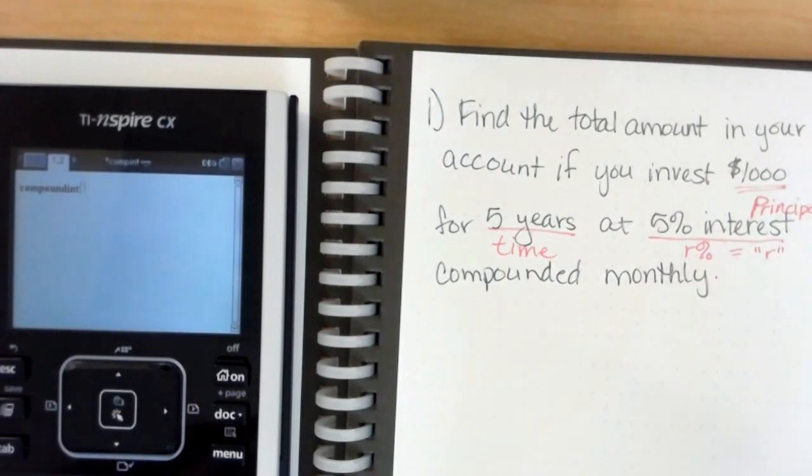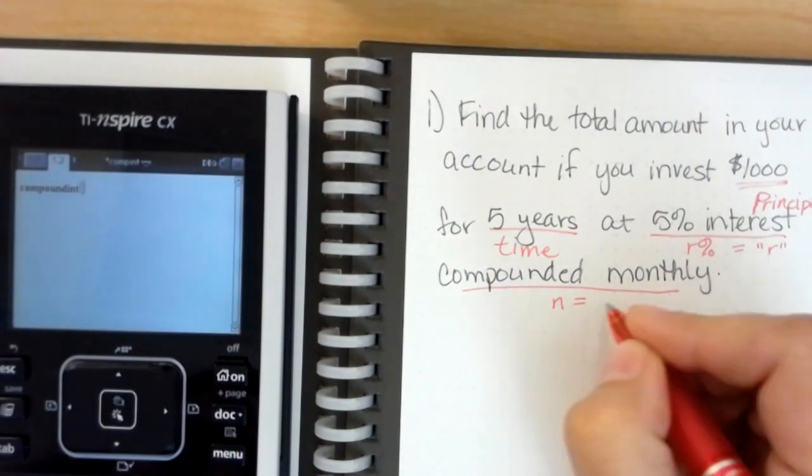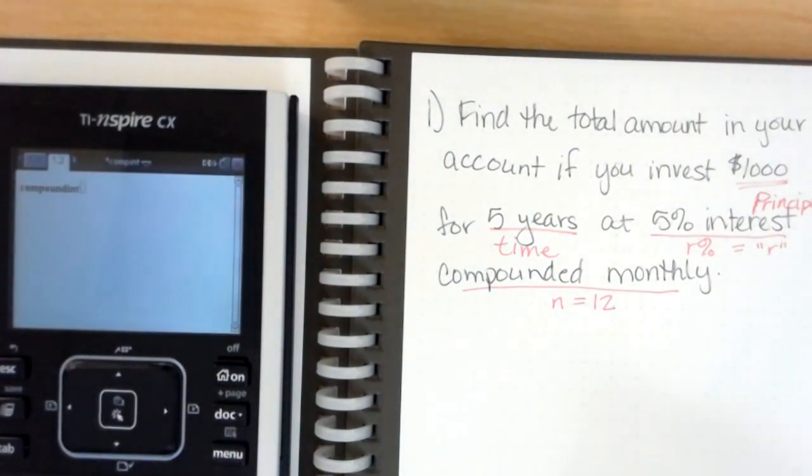We want to type it in as just the r, we don't need to type in the percent sign. And then compounded monthly tells us our n. In this case, because monthly means there's 12 months in the year, so we're going to use n as 12.